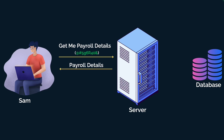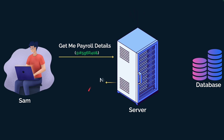Think about a situation where the computation determines that Sam is not supposed to access the payroll data at all. In that case Sam will get an 'access denied' response — hey, you authenticated and you can access the server, but you are not authorized to access the payroll data. This is how authorization works: even if you have access to a service, you may not be authorized to access a specific part of it.